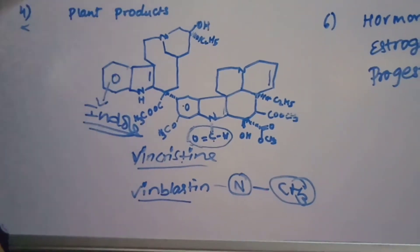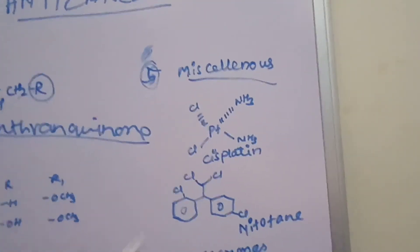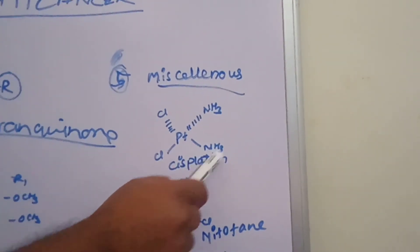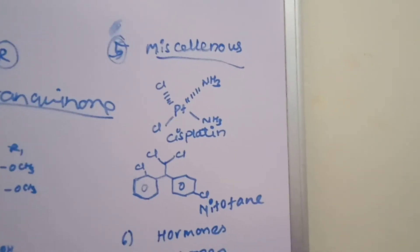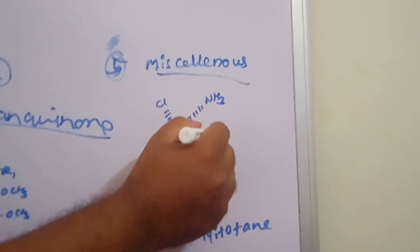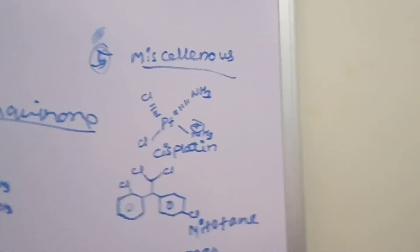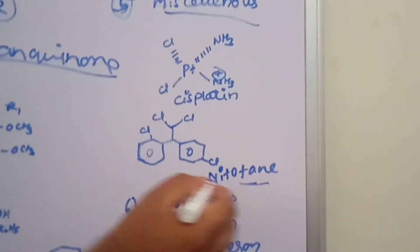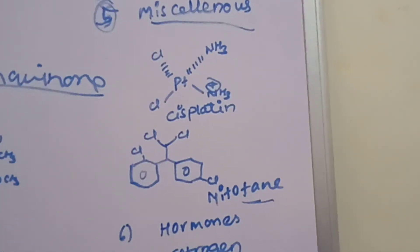The fifth class is miscellaneous agents. The example cisplatin contains platinum (Pt) with two chlorine groups and two ammonia groups. In alpha orientation these are arranged around the platinum center, and a positive charge is noted in beta orientation. Another example is mitotane, which contains a dibenzene structure with three to four chlorine groups.